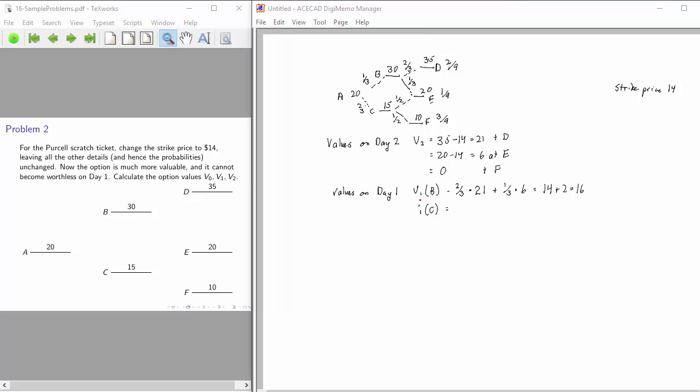If, on day one, the share price is 15, the only way the option can have any value is if the share price rises to 20, in which case the option is worth 6. The probability that that will happen is 1 half. So, we have a value on day one of 16 here and 3 here.